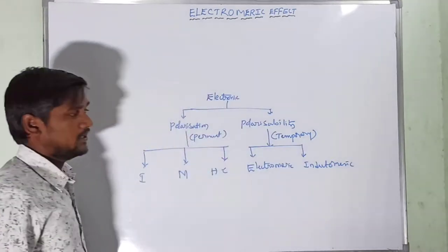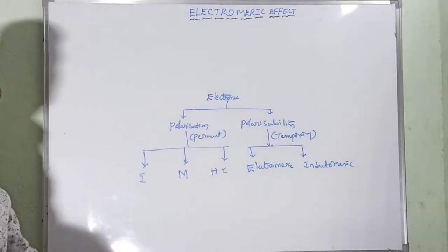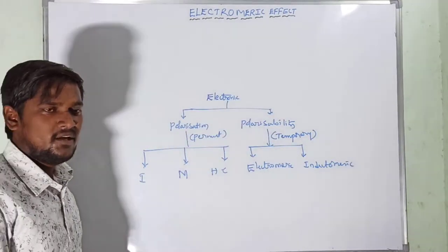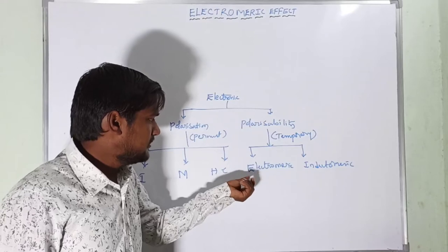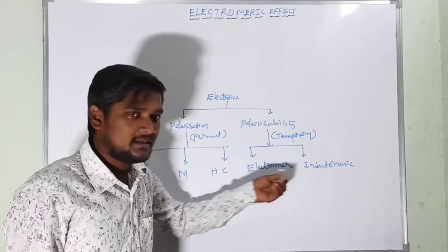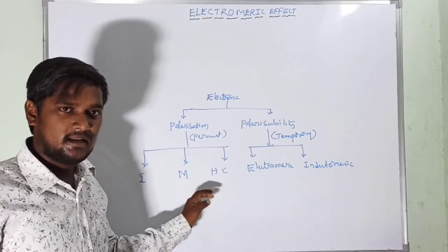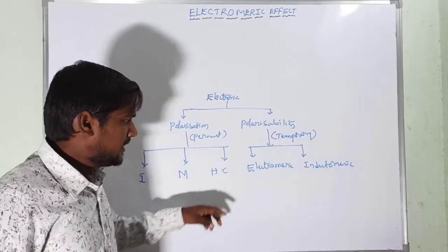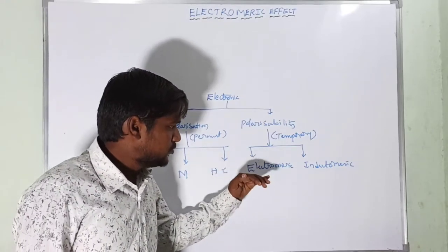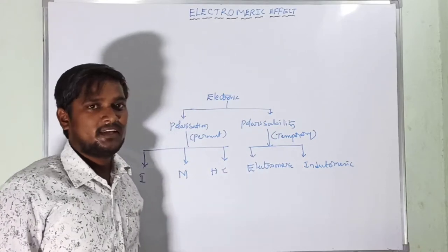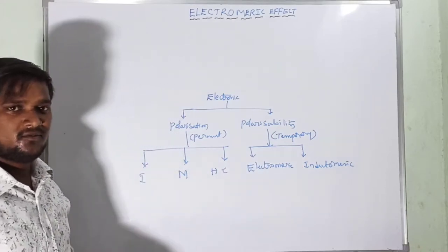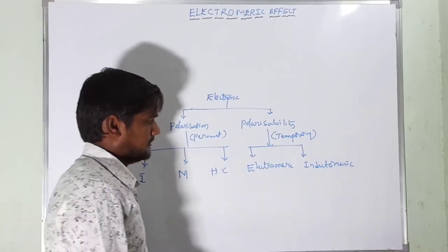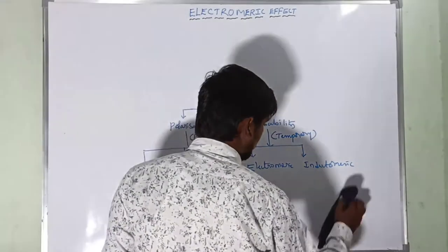This is the basic concept of electronic displacement effects in covalent bonds. The first three effects are completed in our previous lectures. Now let's move on to the electromeric and inductomeric effect in this session.